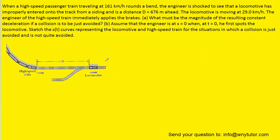In the diagram, it's going to be useful to call the velocity of the locomotive VL, and the velocity of the high-speed train VT.